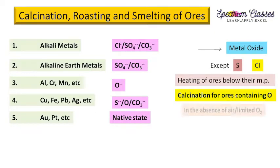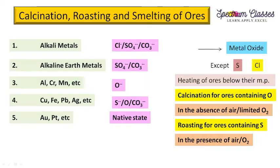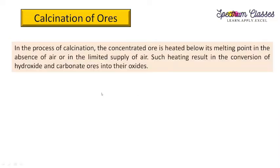If heating is done in the absence of air or with a limited supply of oxygen, that process is called calcination. If it is done in the presence of oxygen, that is called roasting. Since most ores already contain oxygen, we use calcination — heating below melting point in the absence of air. Where oxygen is absent in the ore, we use roasting in the presence of air.